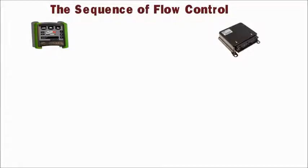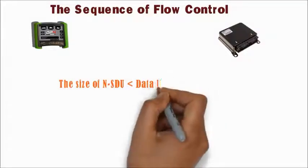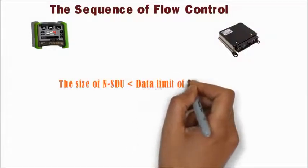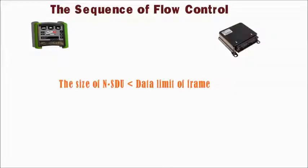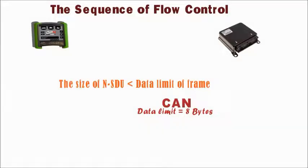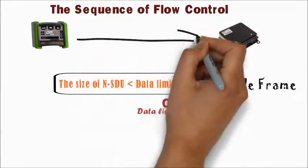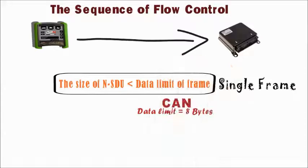Case 1: the size of NSDU is less than the data limit per frame of the underlying communication protocol. Since we are using CAN, the data to be transmitted is less than 8 bytes. In such cases, we use a single frame. The transmitter sends the entire data in a single frame to the receiver.